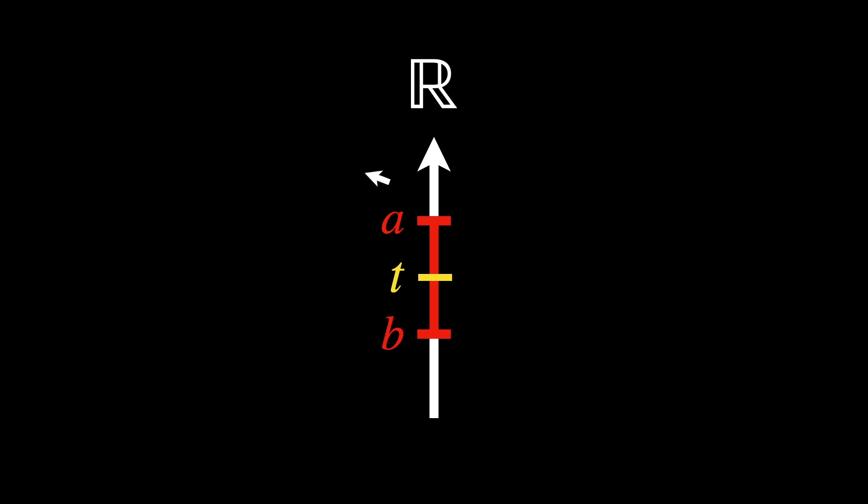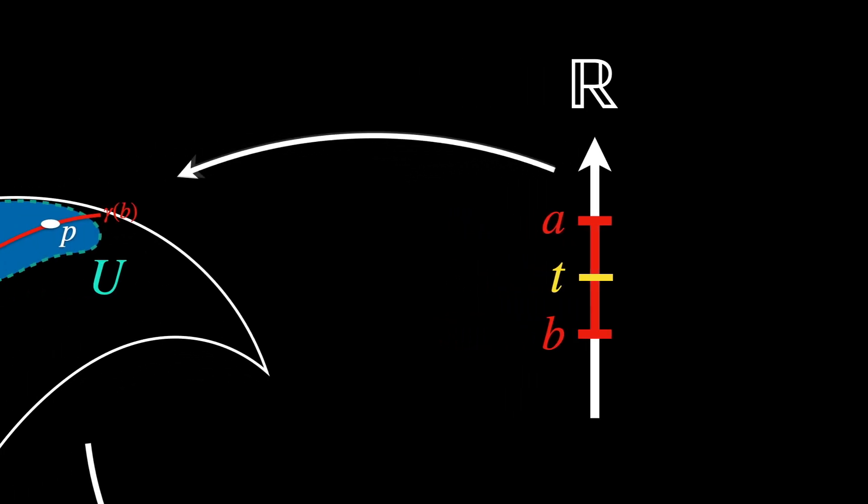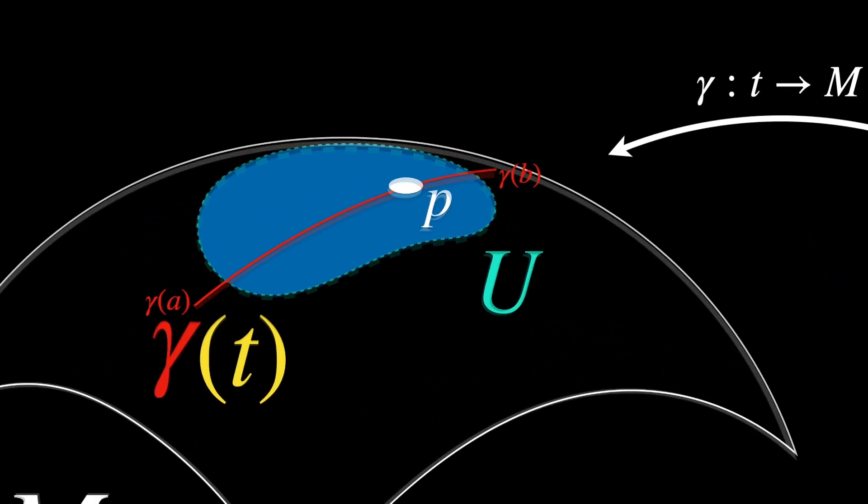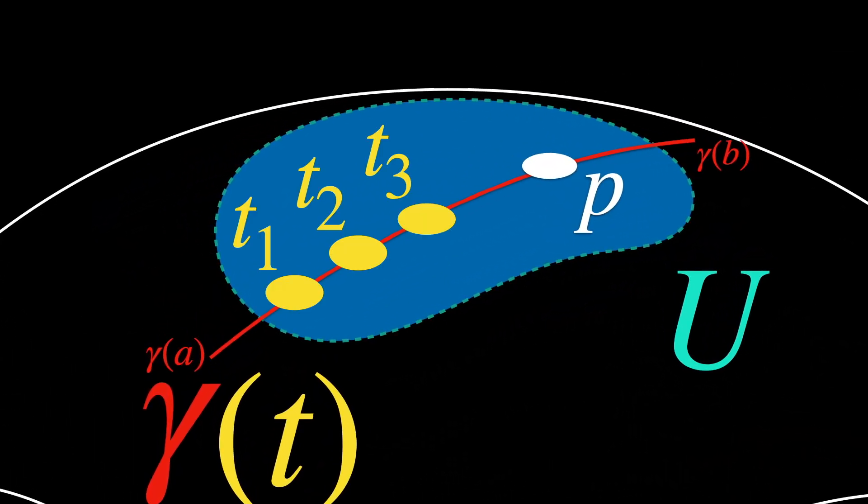And therefore, we map T to the manifold M, using gamma. The parameter T tells us where we are on the curve at a specific time.